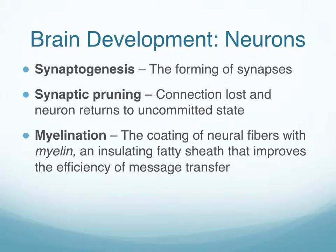Another process taking place in brain development is myelination. This process begins during the fetal period in prenatal development. It's where the neural fibers are coated with myelin — a fatty sheath that coats the axon of the neuron — and it improves the efficiency of message transfer, speeding up the processing of information.